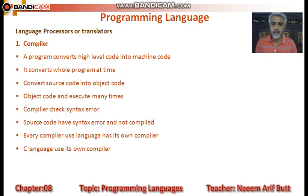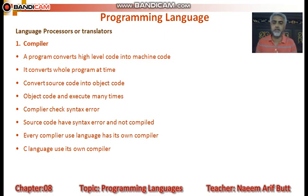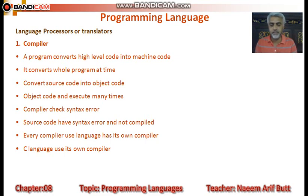Compiler ایک program ہے جو high-level code کو machine code میں convert کرتا ہے۔ یہ پورے program کو ایک ہی دفعہ میں پڑھتا ہے — اگر کوئی غلطی نہ ہو تو ایک ہی دفعہ میں پورے program کا object code بناتا ہے۔ بنا ہوا object code بار بار execute کیا جا سکتا ہے بغیر دوبارہ compile کیے۔ Compiler syntax errors بھی detect کرتا ہے — spelling mistakes، grammatical mistakes — اور آپ کو بتاتا ہے کہ کس line پر غلطی ہے۔ اگر source code میں syntax error ہو تو وہ compile نہیں ہوگا۔